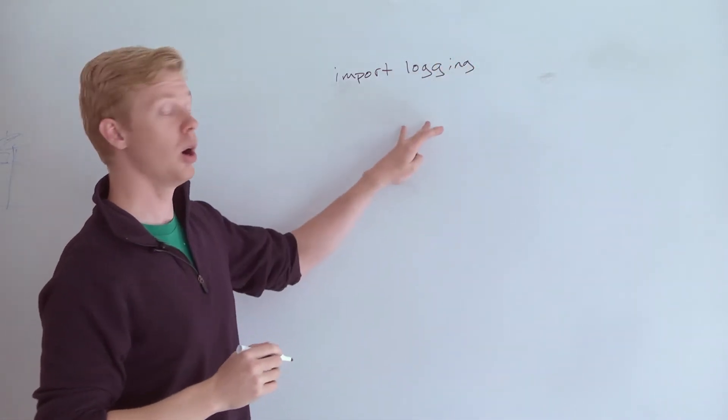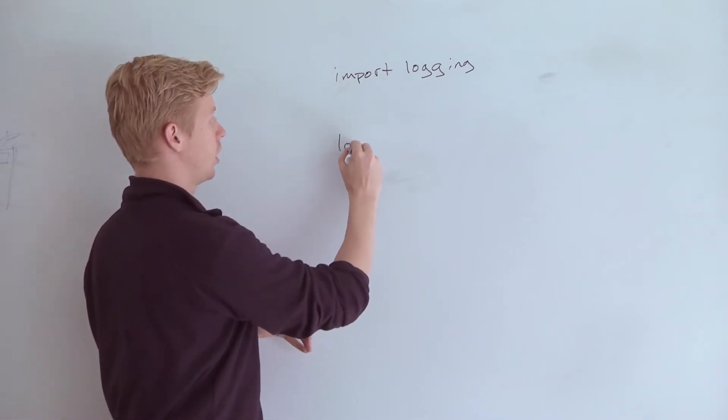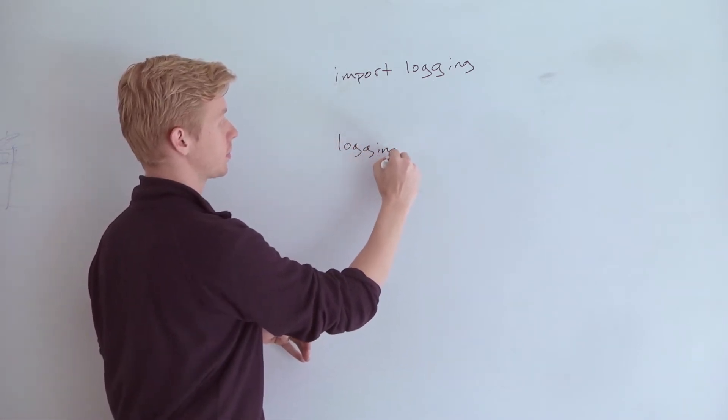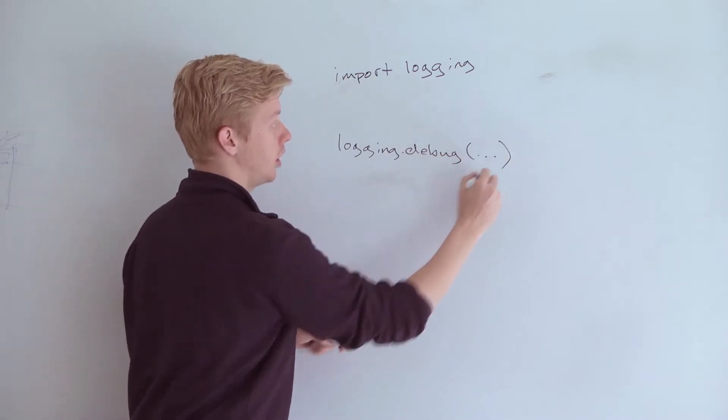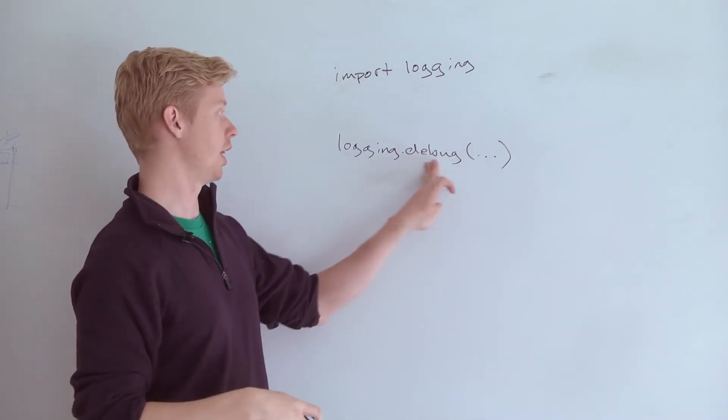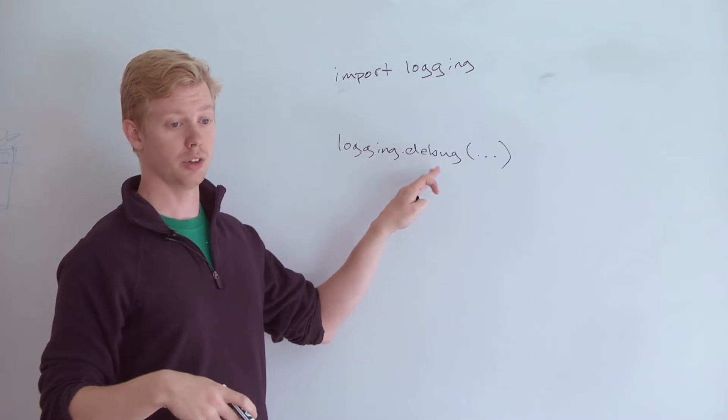So throughout your code you can basically say logging.debug and just give this a string, and it'll print that in the console whenever this line is run if you're in debug mode.